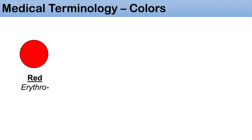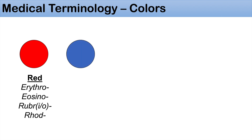Moving on to colors specifically, the color red is the first one we're going to talk about. Red has many different prefixes that denote it. One of them is erythro — you can think of erythrocyte. Another one is eosino. Another one is rubri or rubro. And another one is rhod.